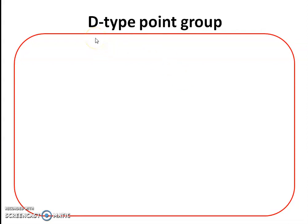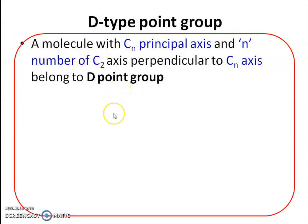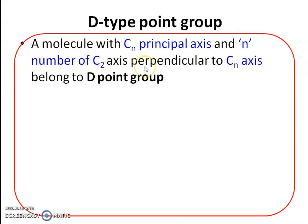The next point group is the D-type point group. A molecule with a Cn principal axis and n number of C2 axes perpendicular to Cn belongs to the D-type point group. The most important requirement is that there must be a Cn principal axis and n number of C2 secondary axes perpendicular to the Cn principal axis — only then does a molecule belong to the D-type point group.